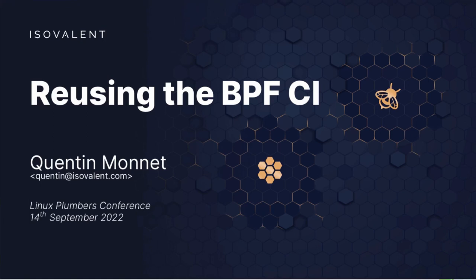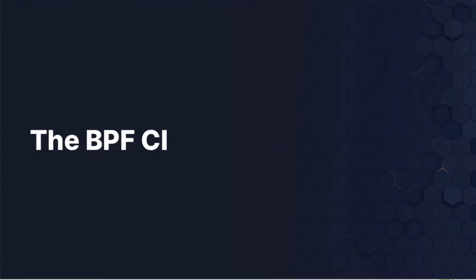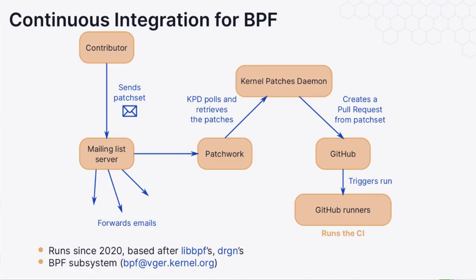I don't suppose that everybody here is familiar with the CI already, so the first part of the talk will provide an overview of the CI. The BPF CI has existed since about 2020 — set up based on what libbpf is using — checking that there is no regression when new commits are merged into BPF. What it does is validate every patch that is being submitted to the BPF mailing list.